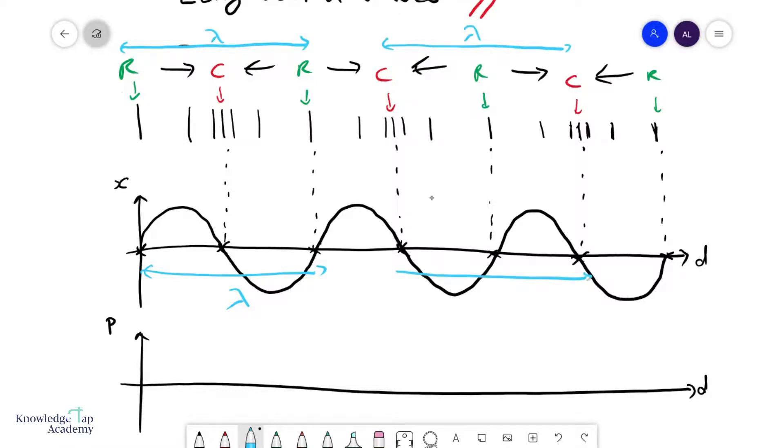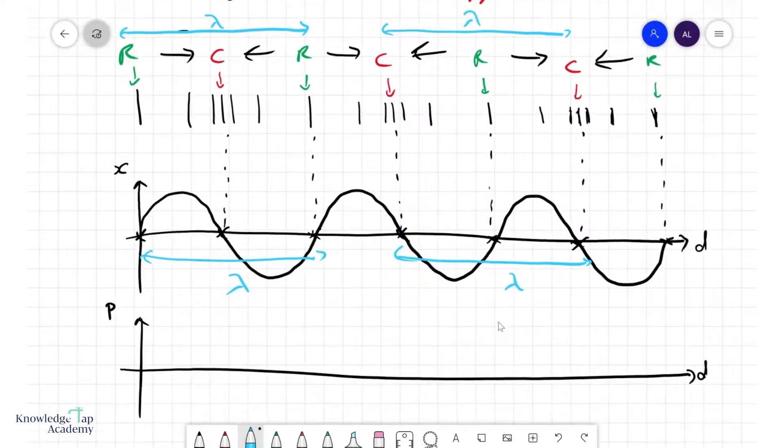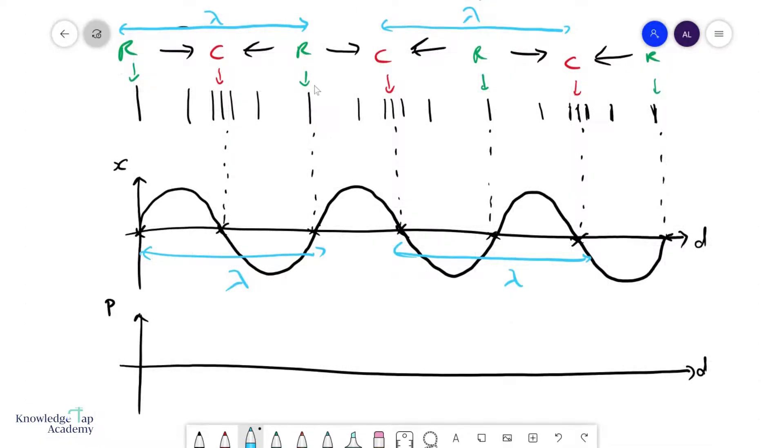One other thing that we can see in longitudinal waves is that there will be a pressure variation along the wave. We can also plot a pressure graph centered around atmospheric pressure. But this time, remember rarefaction should always correspond to a point of minimum pressure, something below atmospheric, and compression to a point where it is of maximum pressure.